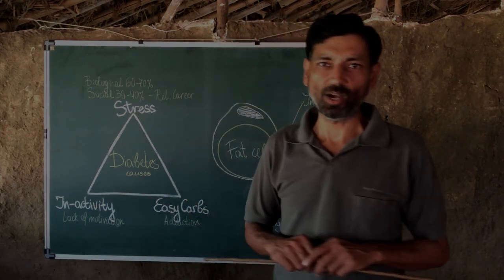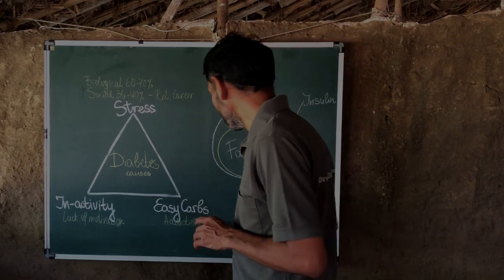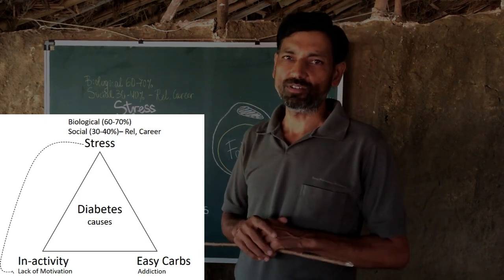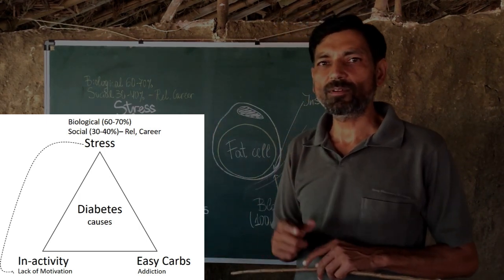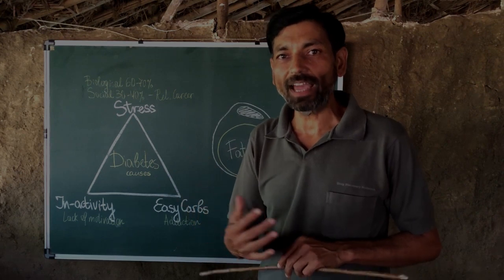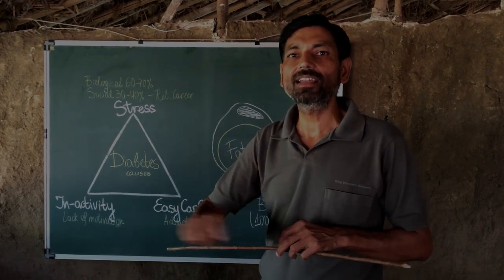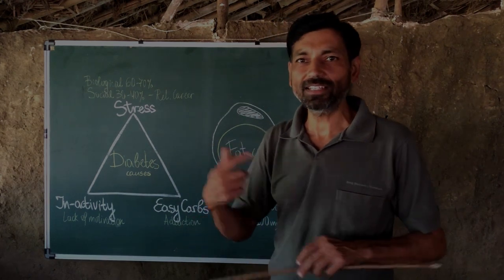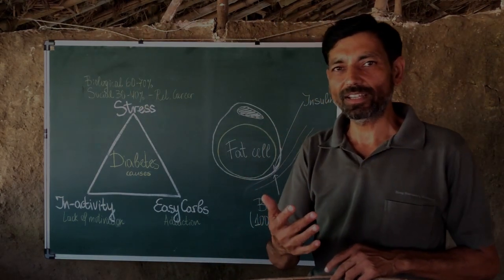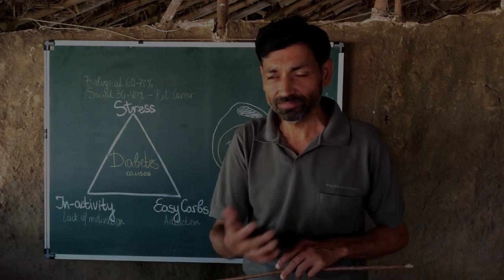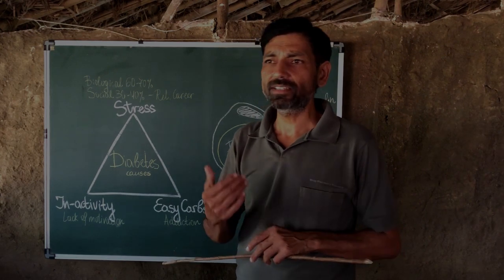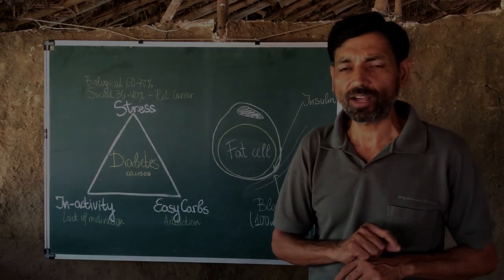Let me take easy carbs first. It is carbohydrates that get converted into glucose, and the conversion rate depends on how complex that carbohydrate is. If carbohydrate is very complex, as found in millets, the conversion rate is slow, and you may utilize it at the same rate, so blood glucose doesn't spike. But if the conversion is faster — like with sugar itself, or anything highly processed — the glucose load rises quickly.